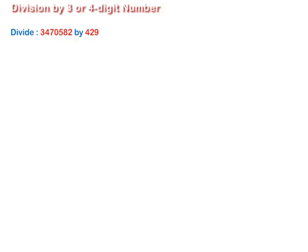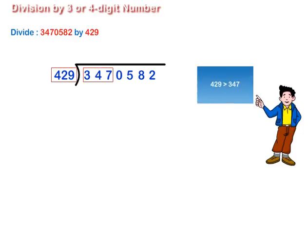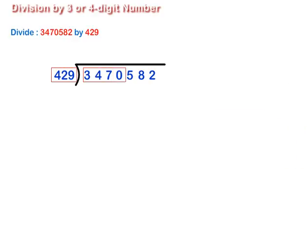Let us divide 3470582 by 429 and find the quotient and remainder. Step 1. The divisor consists of three digits. So, we consider the number formed by three digits on the extreme left side of the dividend. That is 347. But 429 is greater than 347. So, we take up the number consisting of four digits on the extreme left of the dividend. That is 3470. Our first dividend, therefore, becomes 3470.